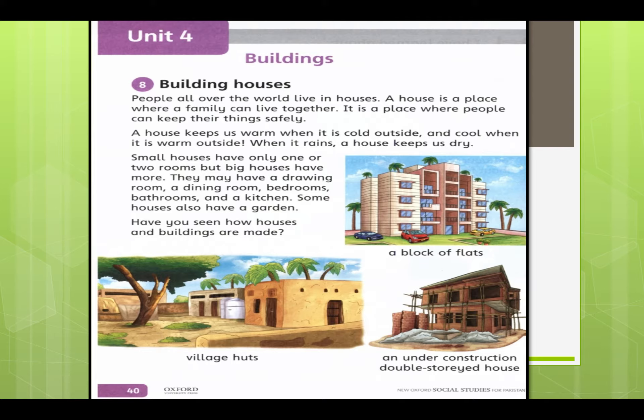Small houses have only one or two rooms, but big houses have more rooms — like a drawing room, dining room, bedroom, bathroom, and kitchen. Some houses also have a garden. Have you seen how houses and buildings are made?